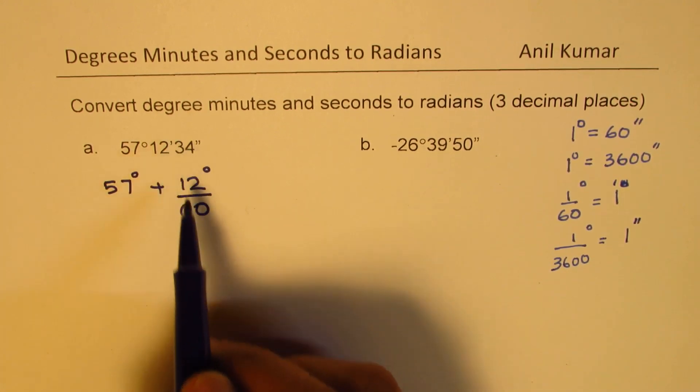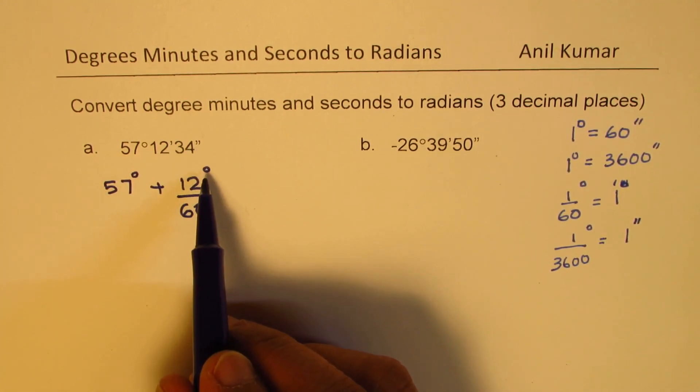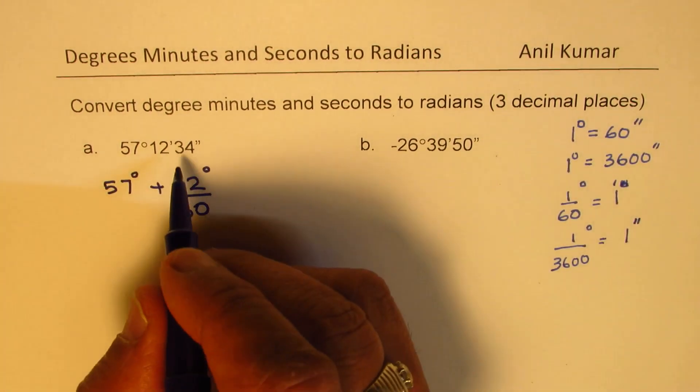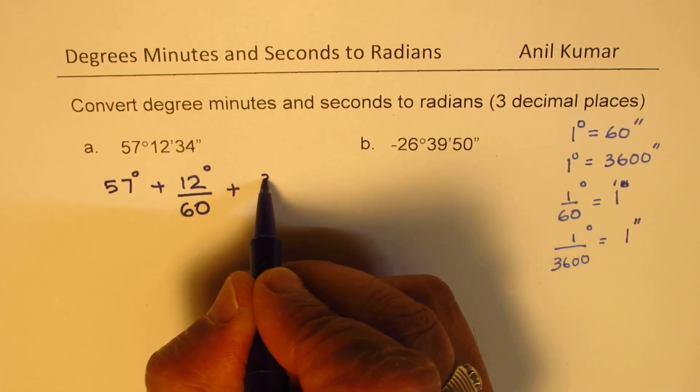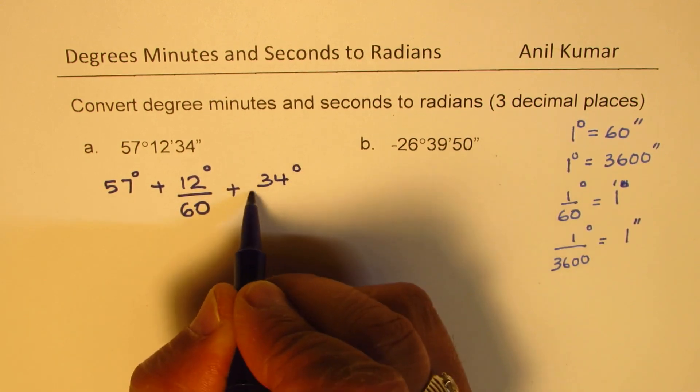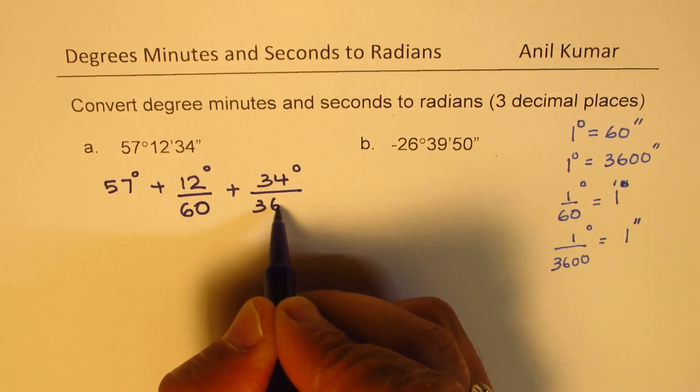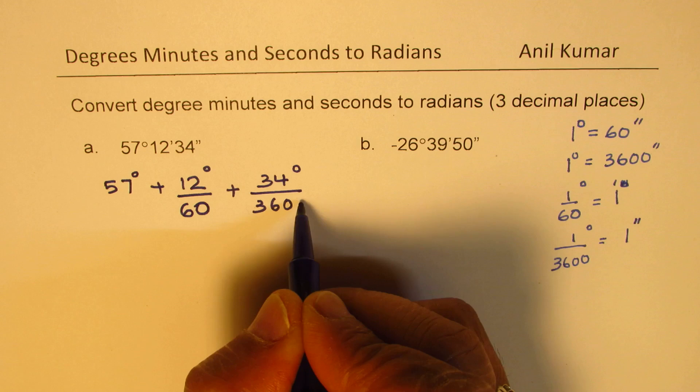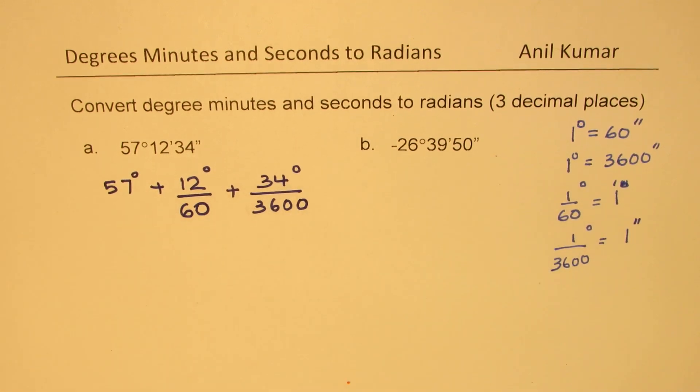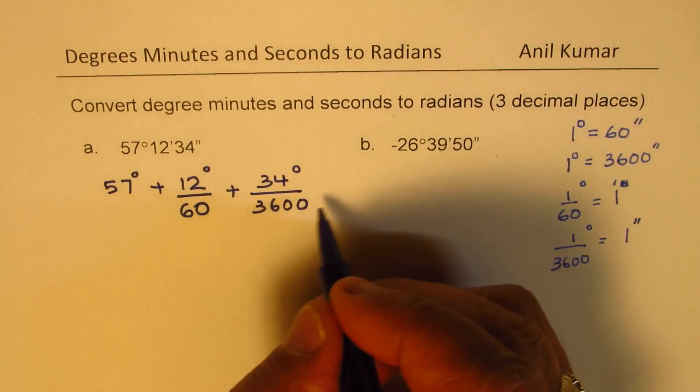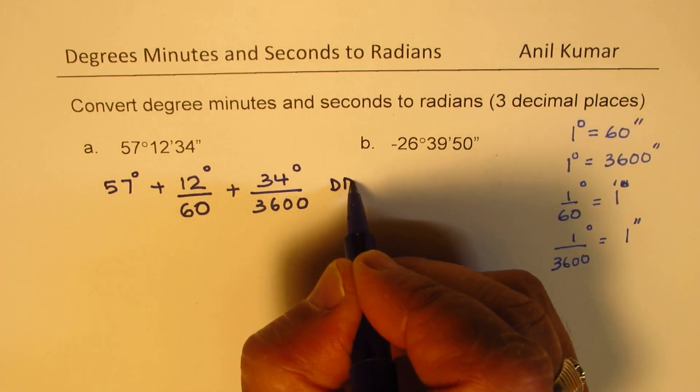So 12 minutes could be written as 12 degrees divided by 60, and 34 seconds can be written as 34 degrees divided by 3600. So that is your conversion to decimal degrees.